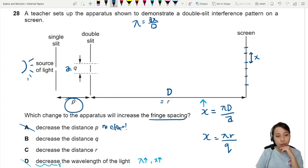Decrease the distance Q. Okay, that one we can check. When you decrease Q, this one decrease, it's inversely proportional. So you see X is proportional to 1 over Q. So when you decrease that, fringe spacing will increase. Okay, that's the answer.